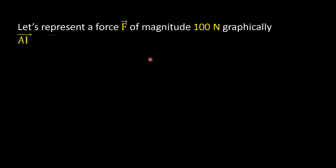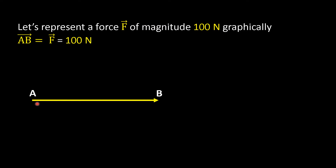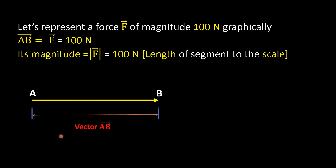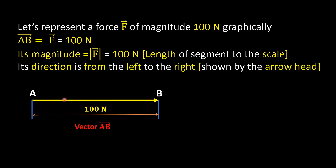Let us represent a force F-bar of magnitude 100 N graphically. We have AB-bar equals F-bar equals 100 N, which we represent by a directional arrow AB. Its magnitude, 100 N, is represented by the length of the line segment to scale, and its direction is from left to right, shown by the arrowhead.